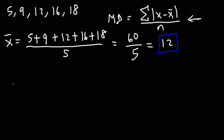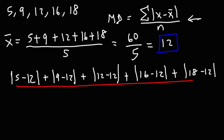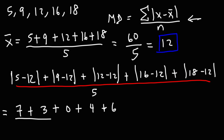Using this formula, we are going to take the absolute difference of each number with the mean: the absolute value of 5 minus 12, then 9 minus 12, then 12 minus 12, then 16 minus 12, and then 18 minus 12, and divide this by n which is 5. So: |5−12| = 7, |9−12| = 3, |12−12| = 0, |16−12| = 4, and |18−12| = 6. And then we divide by 5.